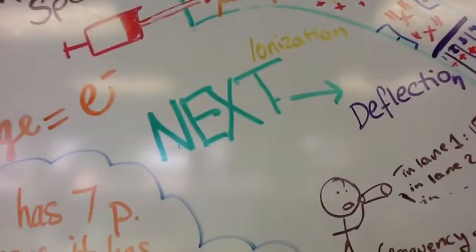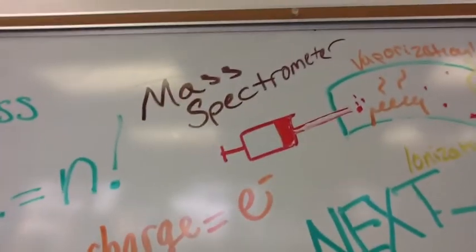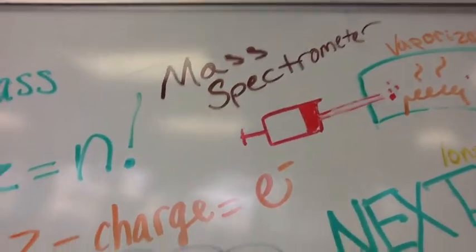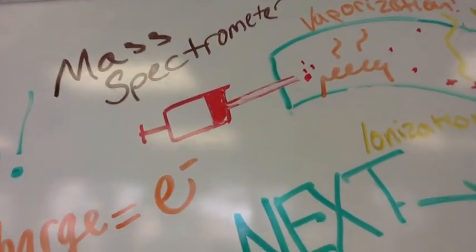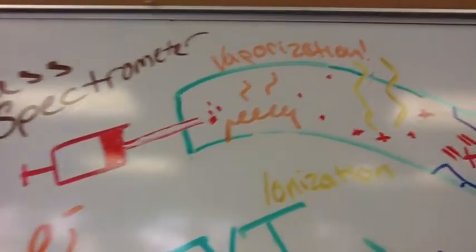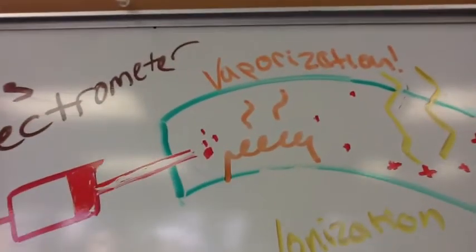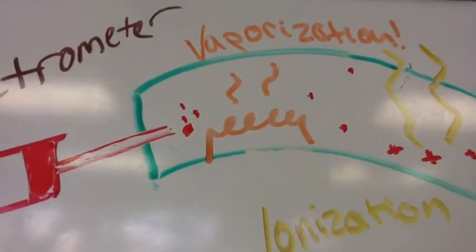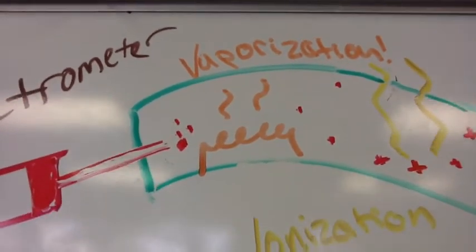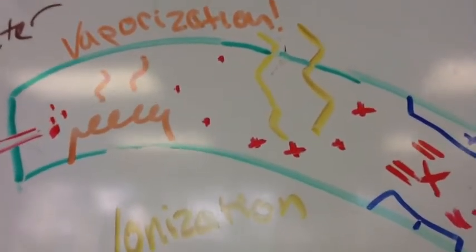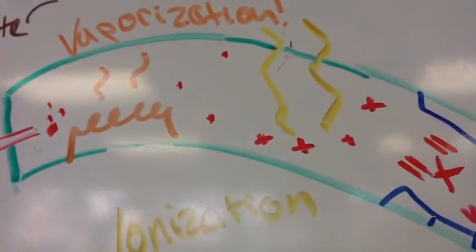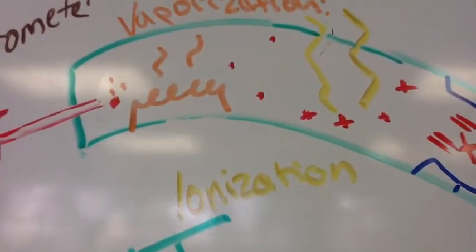Next, we should talk about the mass spectrometer. A sample of an element with different isotopes is inserted into the mass spectrometer, where it is heated by a coil and converted into gas. This conversion is called vaporization. Next, a high-energy beam removes electrons from the atom, leaving only positive ions. This is called ionization.